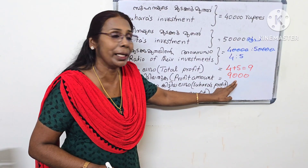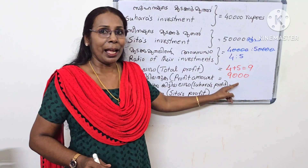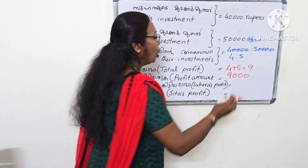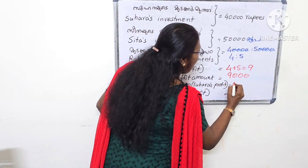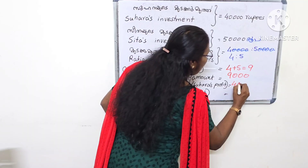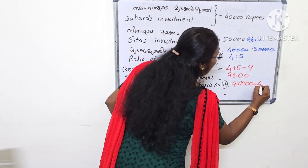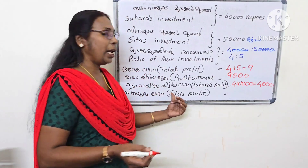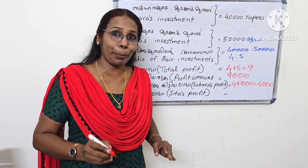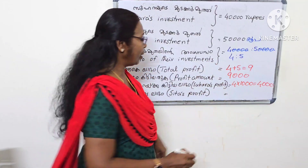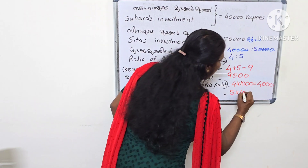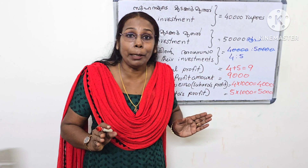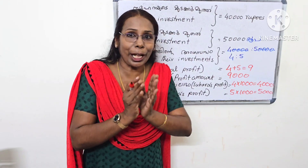The answer is in the ratio 4 and 5. So we divide the profit of 9,000 rupees in the ratio 4:5. The total parts are 4 plus 5 equals 9. That's a total of 9 parts.